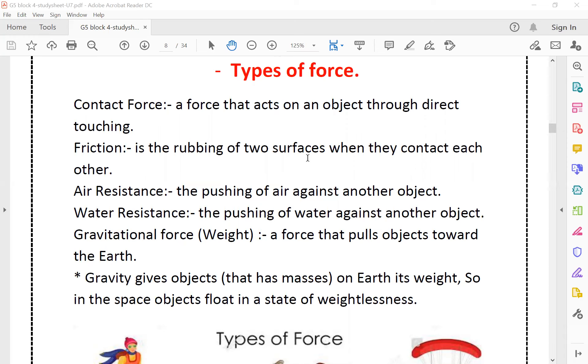Air resistance is another type of force and also it's a kind of friction force. It happens like the pushing of the air against another object, like the friction between the air and the plane. Water resistance is the pushing of water against another object that moves on the surface of the water, like the water resistance between the boat and the water. The gravitational force or the weight is the force that pulls objects toward the center of the earth that keeps us stuck on the surface of the earth.